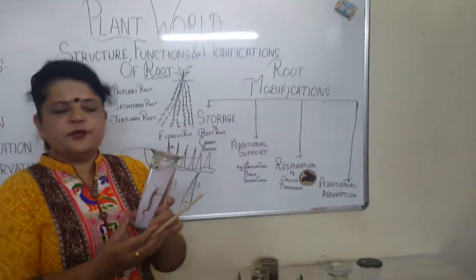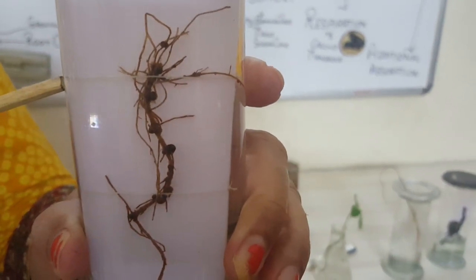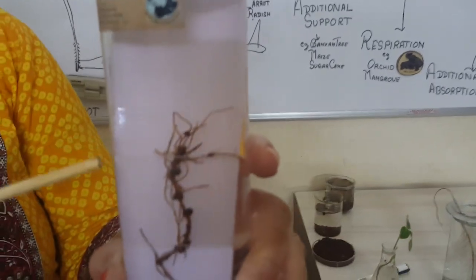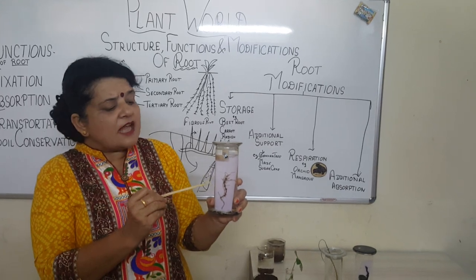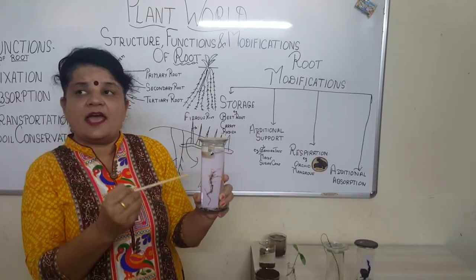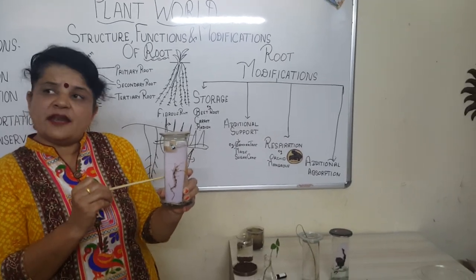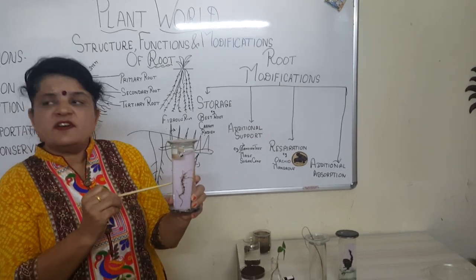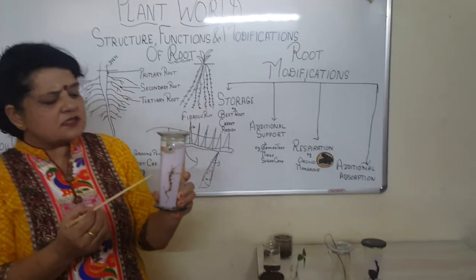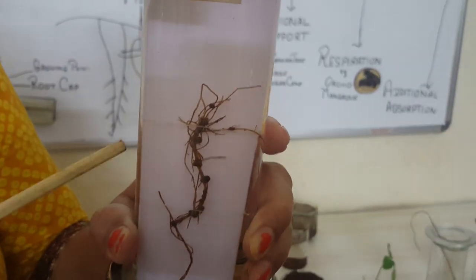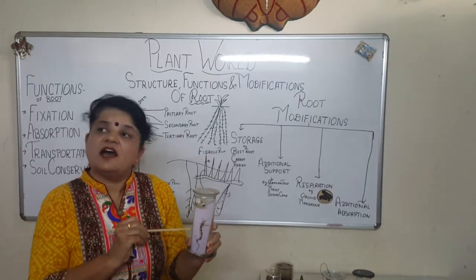Here is another root with bulging, node-like structures on it. These roots are found in leguminous plants like pea and groundnut. Inside these nodules lives a bacterium called Rhizobium. This bacterium helps the root by fixing nitrogen from the air — converting it into nitrates — which the plant then takes up and grows well. Both are benefited: the plant gets nitrates from Rhizobium, and Rhizobium gets shelter in the root. This is a mutual benefit, as the plant cannot absorb nitrogen directly from the air.